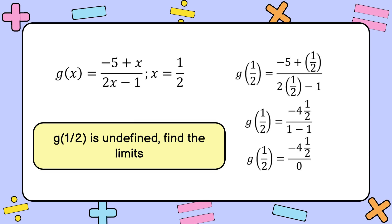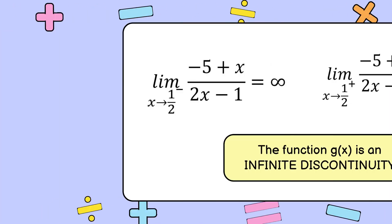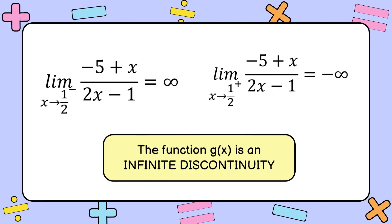Since the function is undefined, we must find the limits. The limit of negative 5 plus x over 2x minus 1 as x approaches 1 half from the left goes to positive infinity. Similarly, the right-hand limit as x approaches 1 half from the right goes to negative infinity.